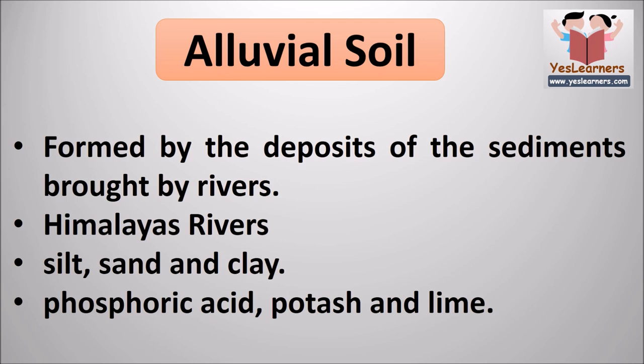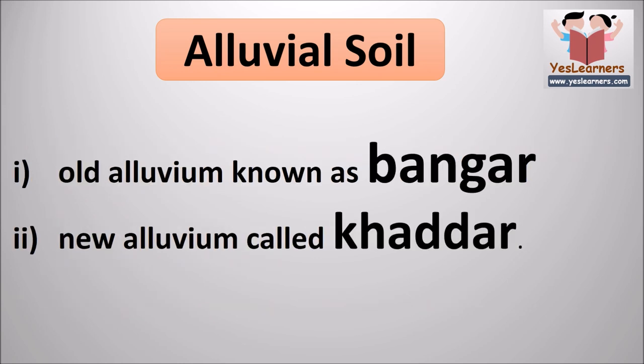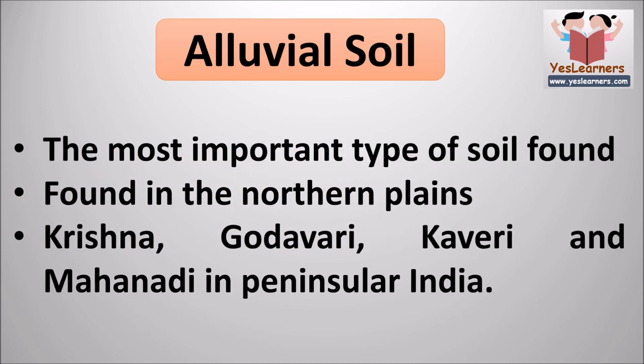Alluvial soil is formed by the deposits of sediments brought by rivers. Most rivers originate from the Himalayas and bring a high amount of sediments. The soil is made up of particles like silt, sand and clay. It has adequate amounts of phosphoric acid, potash and lime. Alluvial soil is of two types: old alluvial is known as Bhangar and new alluvial is called Khadar.